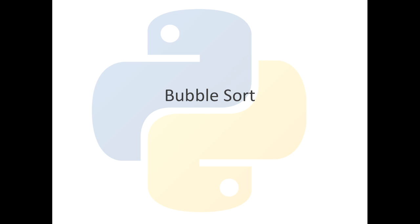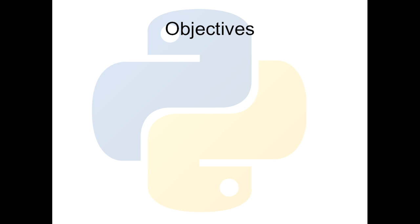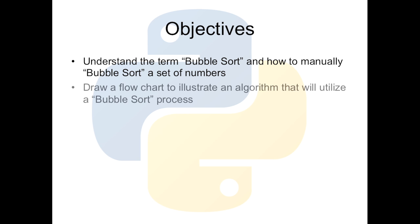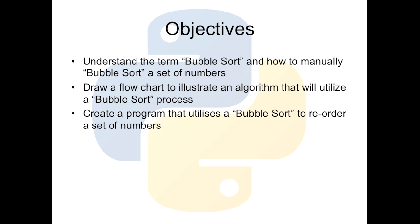In today's lesson we're going to look at the bubble sort — a method of sorting numbers from smallest to largest. The objectives are to understand the term bubble sort, how to manually bubble sort a set of numbers, draw a flowchart to illustrate a bubble sort algorithm, and then create a program that utilises a bubble sort to reorder a set of numbers. This will be done in Python.